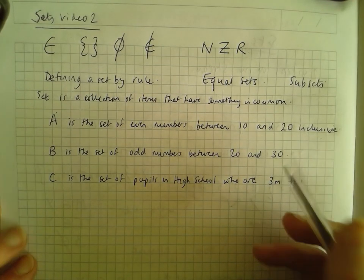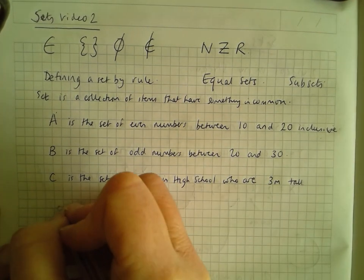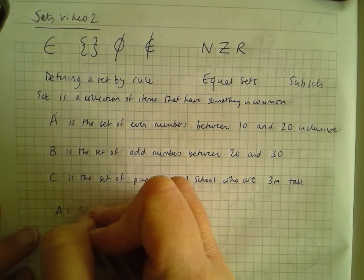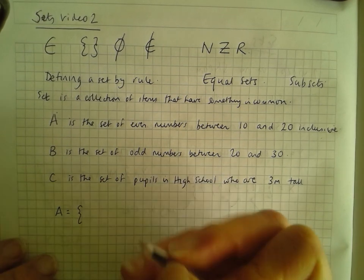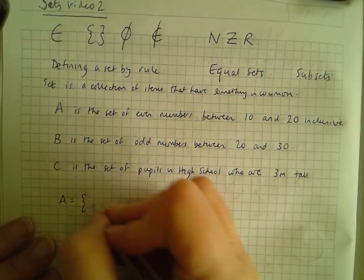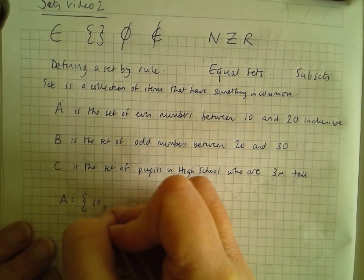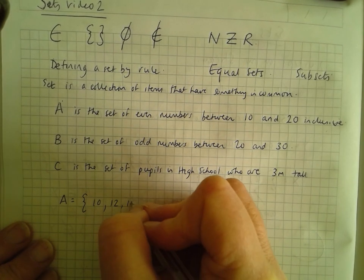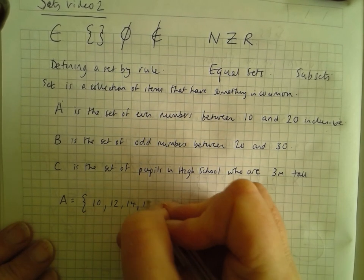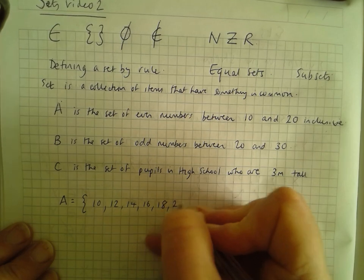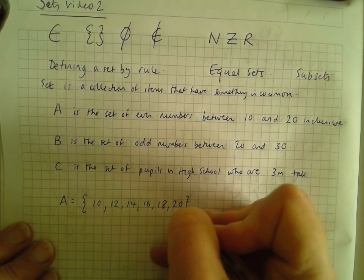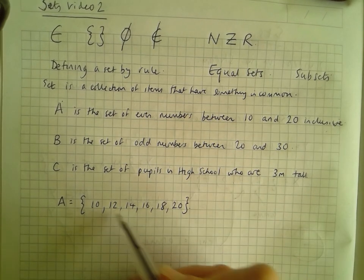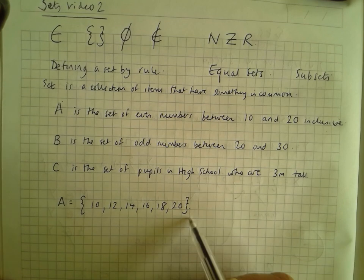If I was to list set A, I'd use curly brackets and write down all the even numbers between 10 and 20 including 10 and 20. We write each number once, put a comma between them, and use curly brackets.